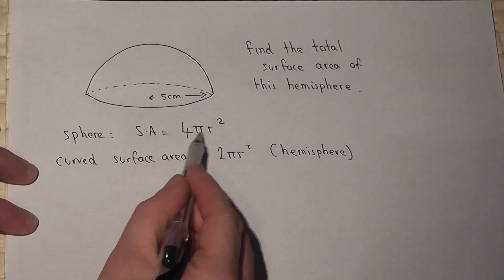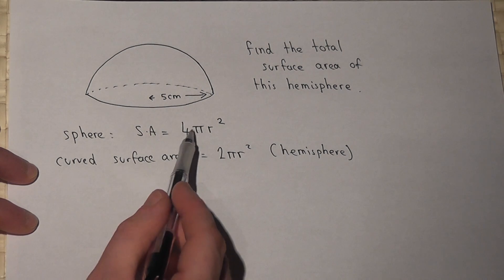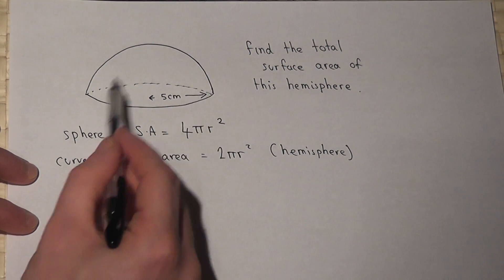So again, 4 pi r squared is the total curved surface area of a sphere, so if I halve this, I get the curved surface area of a hemisphere.